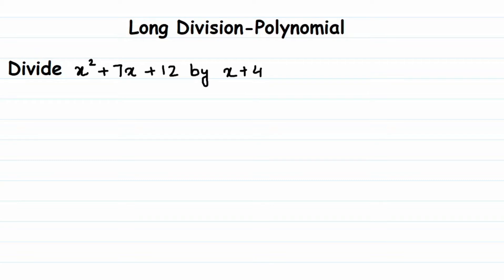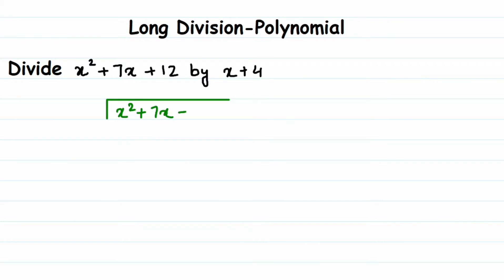Welcome to my channel. Here I'm doing a question on long division of a polynomial. The question is: divide x squared plus 7x plus 12 by x plus 4. So you are dividing a trinomial by a binomial. In such cases, when we cannot factorize or when we want an easy method, we can go for long division. So the dividend is x squared plus 7x plus 12 and the divisor is x plus 4.